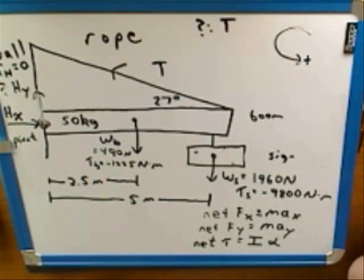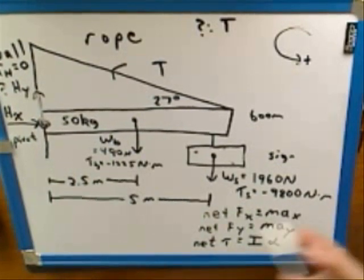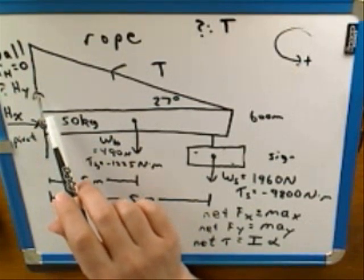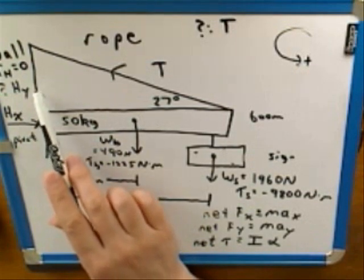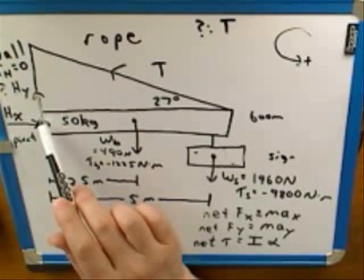And very often, you should choose a point that has a bunch of forces on it. You should choose a point with a bunch of forces on it because then you won't need to worry about any torques from those forces. Does that make any sense?